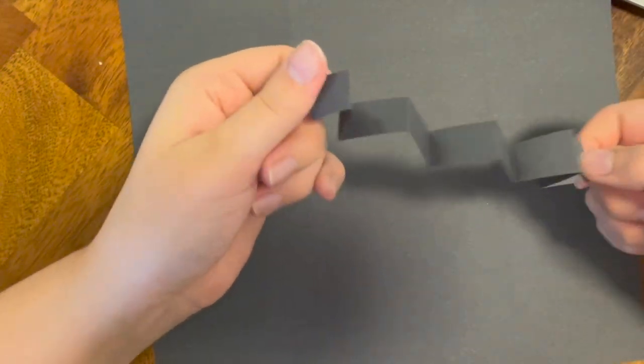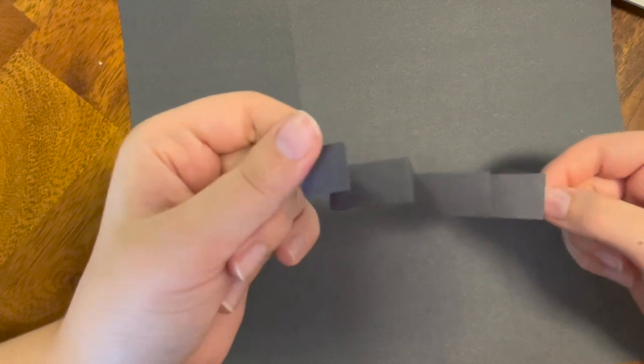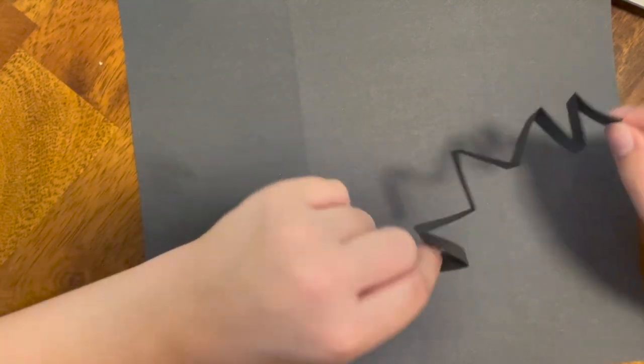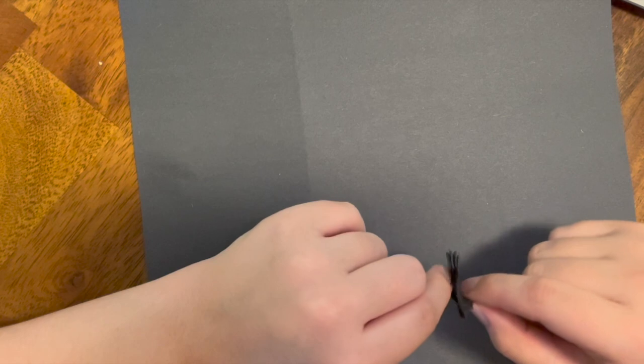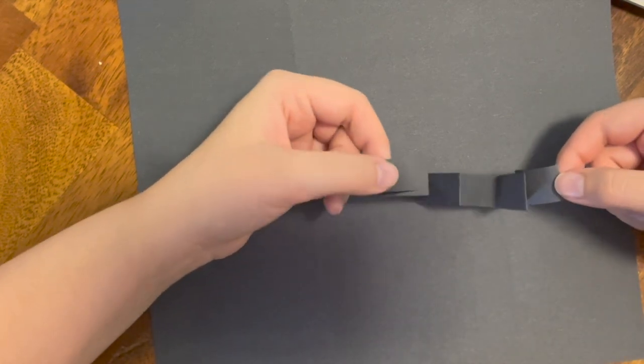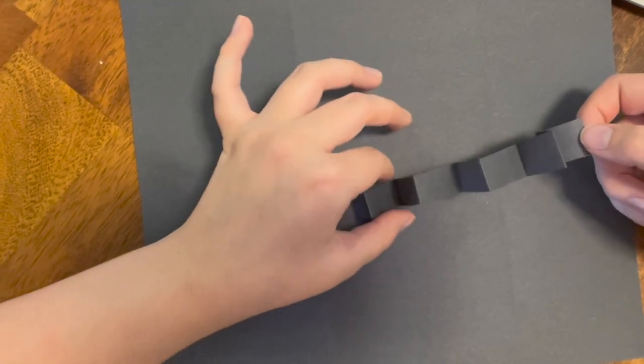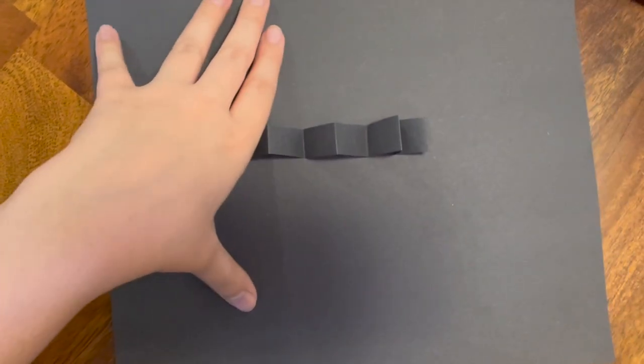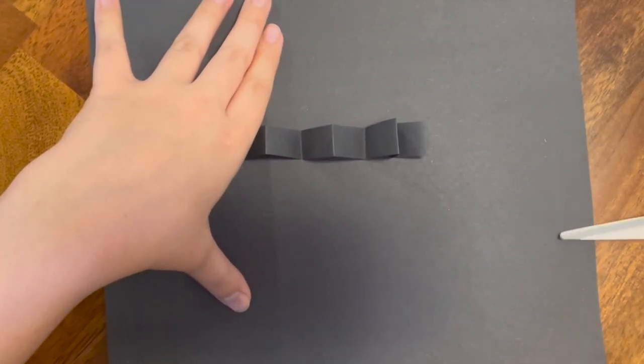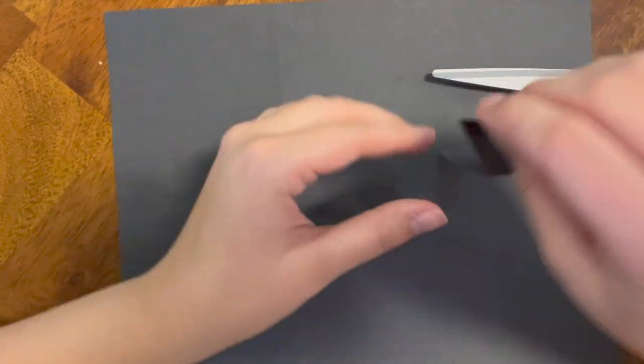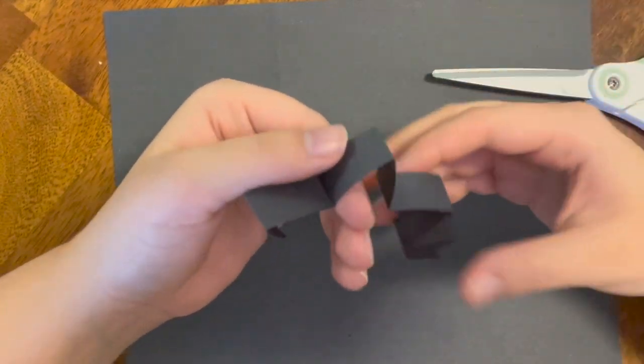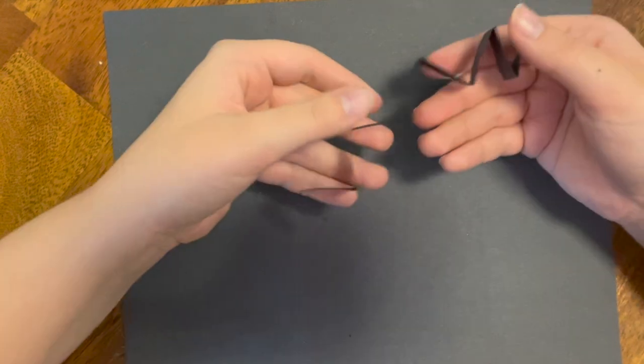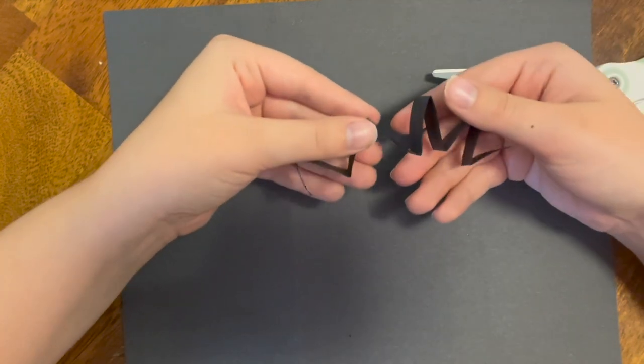This is one leg. Now we are going to create seven more as spiders have eight legs. Go ahead and pause the video now to create the rest of your spider's legs. Remember, first cut a strip from the edge of your paper and then fold up and down until you get something like this. Pause the video now to complete the rest of your legs. You should have eight in total once done.